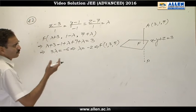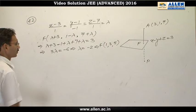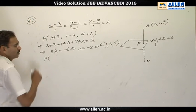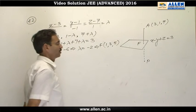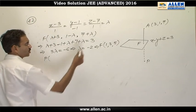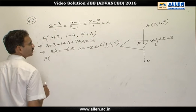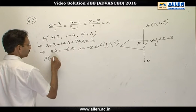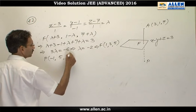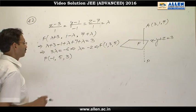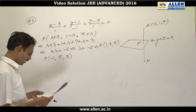Using F we will calculate P. P will be twice F minus A, as F is the midpoint. So it will be 2-3, 6-1, and 10-7. So P is (-1,5,3).